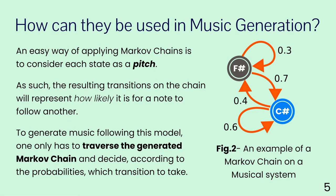So how can we use this principle to generate music? An easy way is to consider each state as a pitch. We have the same system shown before, but the two states are two different pitches. The transitions between pitches are given probabilities that now represent how likely it is for one note to follow another. Given a randomly chosen initial state, we can traverse this Markov chain and decide, according to transition probabilities, what the next pitch should be — and thus generate a melody.